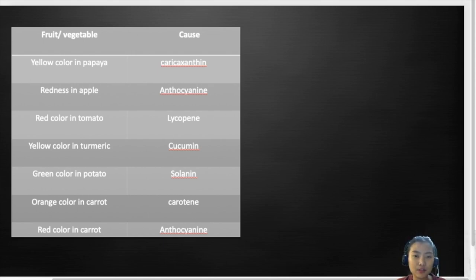In the same way, in this table, I've given some of the fruits and vegetables and the causes or the pigments for the color. The first one is yellow color in papaya is caused by carotenexanthin. Redness in apple is due to anthocyanin. The red color in tomato is due to the presence of lycopene. Yellow color in turmeric is due to the presence of curcumin. Green color in potato is solanin. Orange color in carrot is due to carotene. And red color in carrot, again, it's due to anthocyanin.